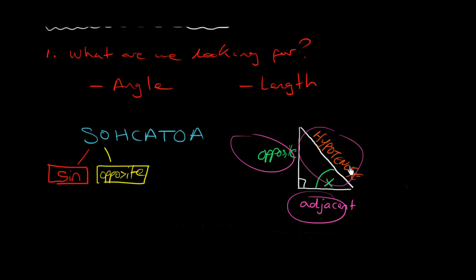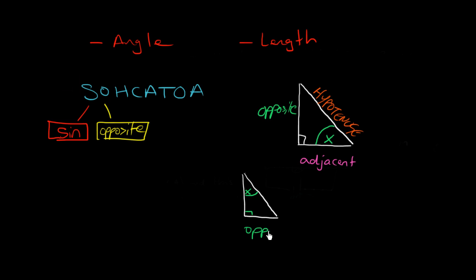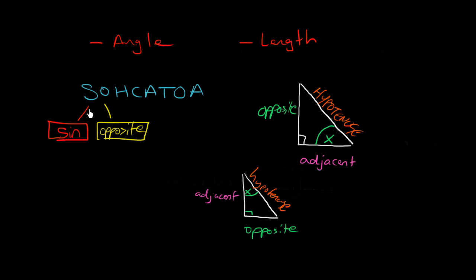Adjacent means next to, so the adjacent side is next to the angle, and the opposite side is opposite the angle. I'll draw a different triangle with a different angle to show what it looks like. The hypotenuse doesn't change — it's always opposite the right angle. The remaining side is then called the adjacent. So depending on which angle is given, the adjacent and opposite labels swap around.